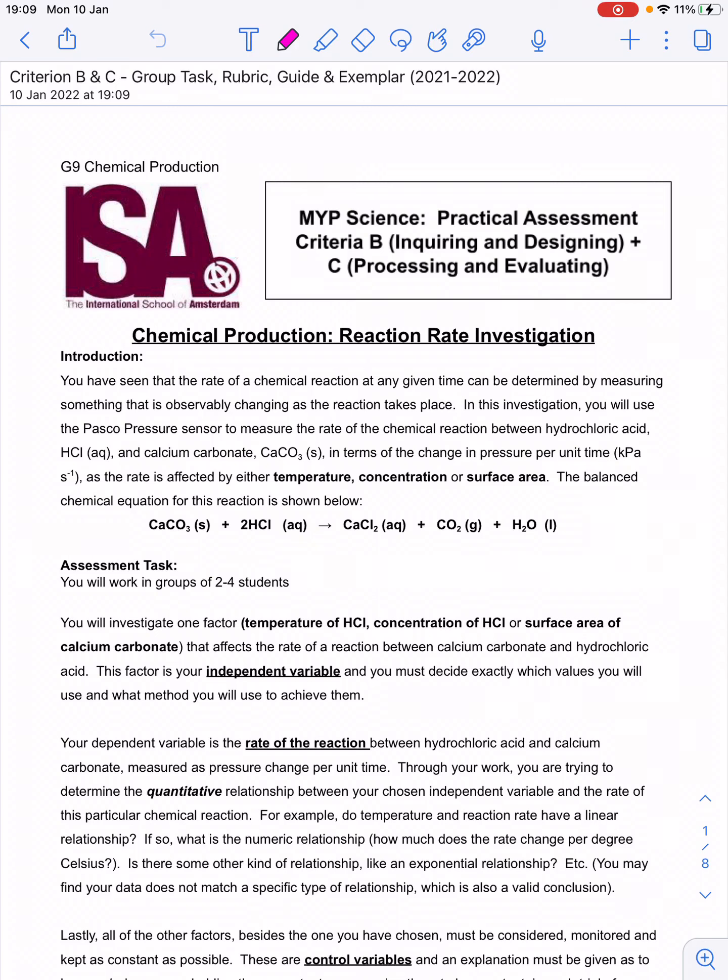So this is a video to try to help explain some expectations related to Criterion B. Your first Criterion B lab report of the year is to plan out your investigation into a factor affecting the rate of reaction.